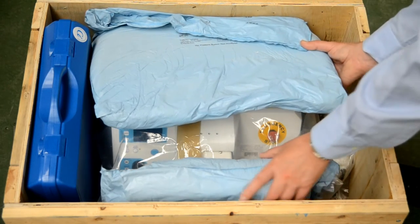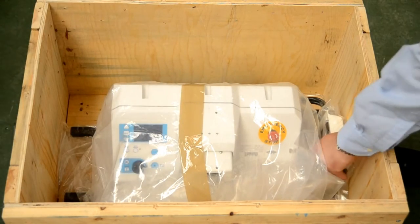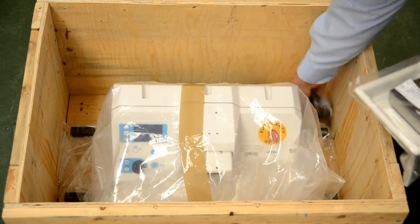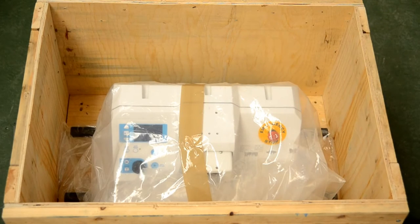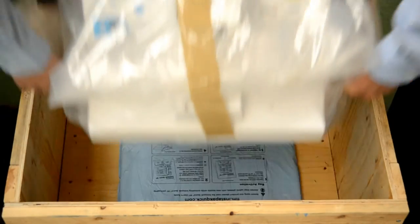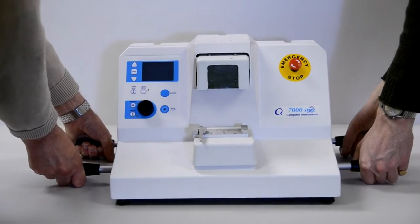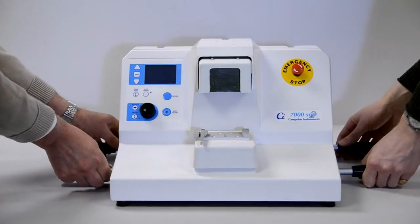The slicer weighs approximately 33 kilograms and will require two people to lift it from its shipping box to the bench. The slicer should always be lifted using the lifting handle supplied. Once the slicer has been placed on a suitable sturdy bench, you can unscrew the lifting handles so that they do not impede use of the instrument or take up too much bench space.